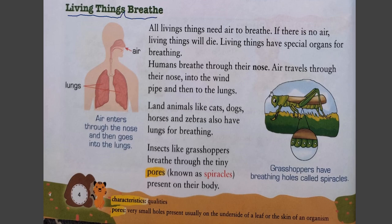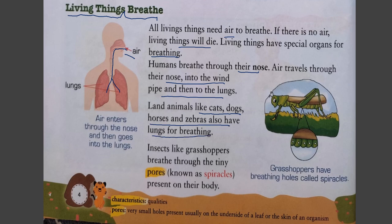Next property: living things breathe. All living things need air to breathe; if there is no air, living things will die. Living things have special organs for breathing. Humans breathe through their nose — air travels through the nose into the windpipe and then to the lungs. Land animals like cats, dogs, horses, and zebras also have lungs for breathing.